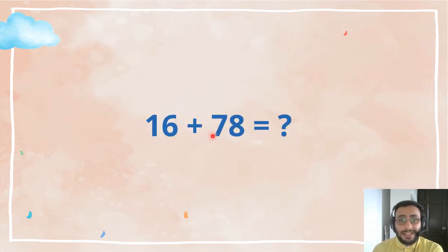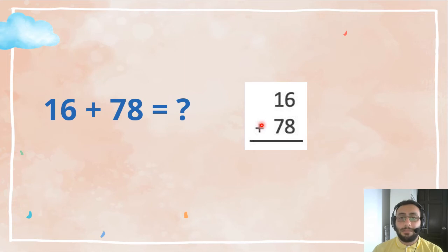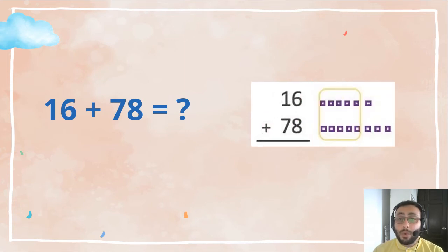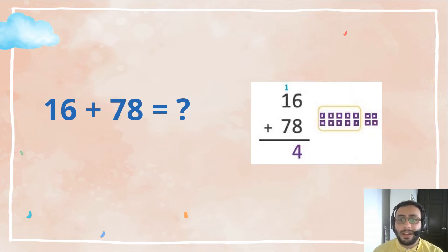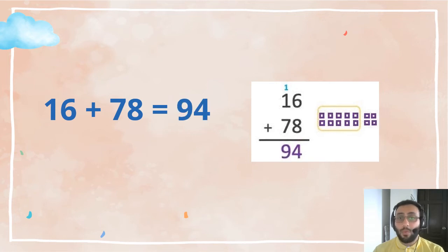We have 16 plus 78. I think this one has regrouping because 6 plus 8 is more than 9. So, let's start. 16 plus 78. 6 plus 8 equals what? It equals 14, right? But, guys, look at here. We have 14 ones. Why don't we group 10 ones into 1 ten? And now, we have 4 ones left. So, we just write the 4 down here. So, now, we go to the next digit, which is the tens digit. We have 1 plus 1 plus 7, which is 9. 1 plus 1 is 2. 2 plus 7 is 9. So, the answer is 94.